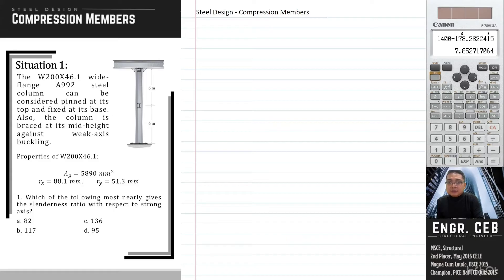The support conditions of the column is pinned at the top and fixed at the base. So this is now our column. Meaning if this will buckle, it will buckle like this. This is the buckling about x-axis.